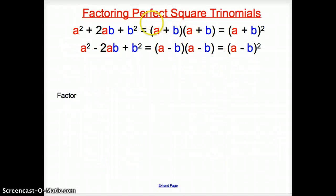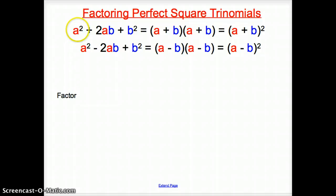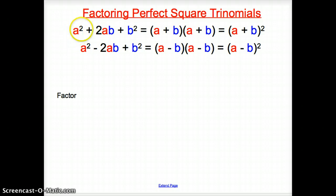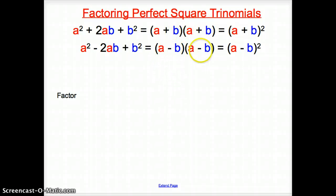This is factoring perfect square trinomials. Here is how we write it algebraically: if we had a squared — which could be 4, 9, 16, 25, any perfect square — we split that apart so something times itself goes in each parenthesis. Same with b and b. And looking at the other form, it's the exact same thing except with minus signs.